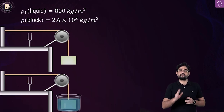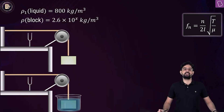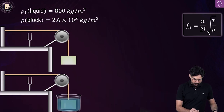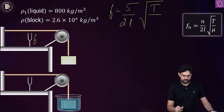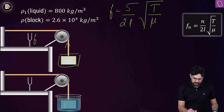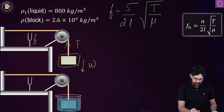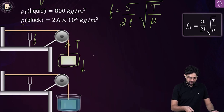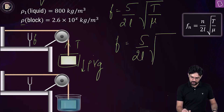When the wire vibrates in its fifth harmonic, the frequency is given by n/(2L) × √(T/μ). Assuming the tuning fork frequency is F: F = 5/(2L) × √(T/μ). The tension is equal to the weight of the block — let V be its volume and ρ its density — so T = ρVg. Thus F = 5/(2L) × √(ρVg/μ). Call this equation 1.